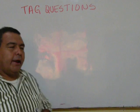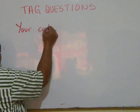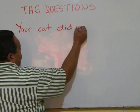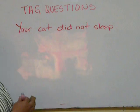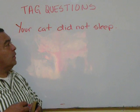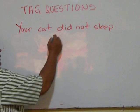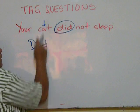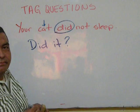Now, let's go the opposite way. Your cat did not sleep. Now, because I'm saying that, I'm expressing a negative statement, I have to go with the tag question in a positive way. Did it? The pronoun for cat is it. Did it?